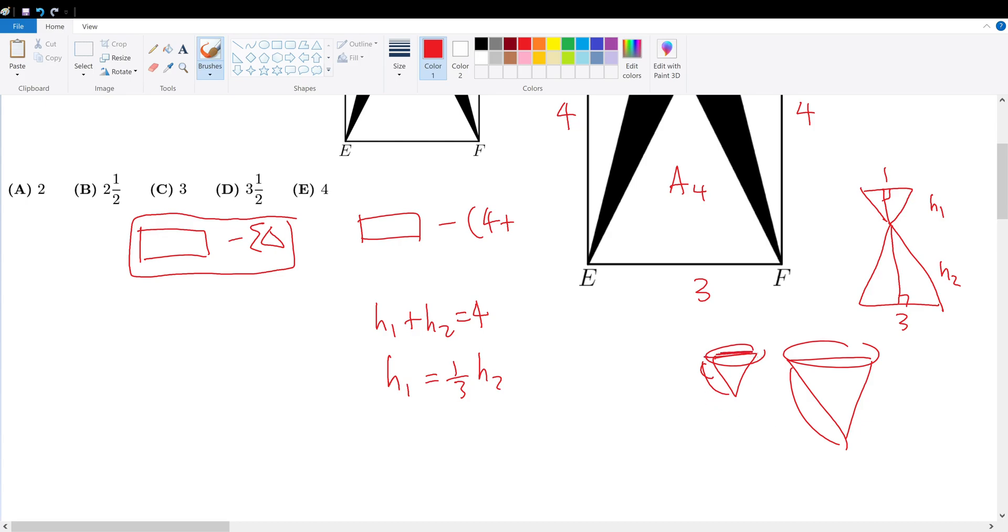So therefore, if the base of this over the base of this is 1 to 3, then the altitude of this over the altitude of this is also 1 to 3. And you get it right here, because H1, if I rearrange it, over H2 is also 1 to 3.